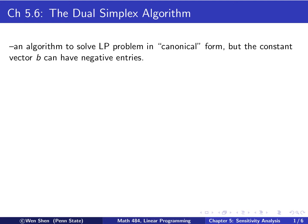This is an algorithm to solve a linear programming problem in canonical form — in quotation sign form. It looks like a canonical form, but we relax one condition: the constant vector b, we allow it to contain negative entries.